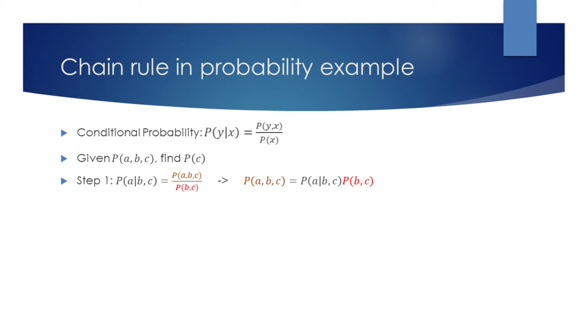We can then express the joint probability of A, B, and C by multiplying both sides with the joint probability of B and C.